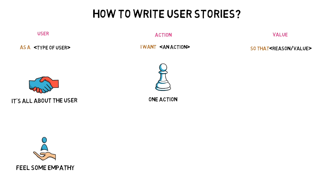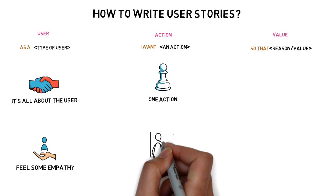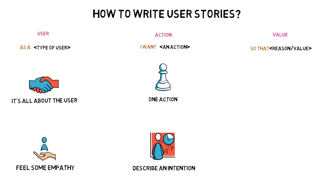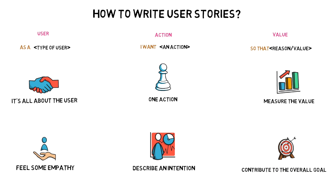One story: as a customer, I want to browse items. And another: as a customer, I want to add items to the cart. Also, describe an intention, not a feature. For example, instead of 'I want to manage my profile,' create a few stories like: I want to be able to register my profile; I want to be able to upload my profile photo; I want to link my credit card to my profile. Each user story will have a different value. Finally, the last piece is dedicated to the value — the benefit users will get after performing an action. Each story should contribute to the general goal of your product, and if you can't answer what value this user story brings to end users, then you're doing something wrong.